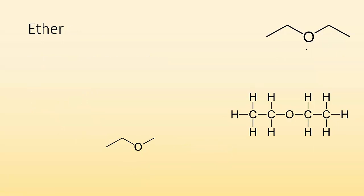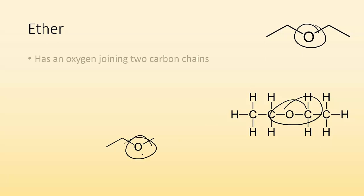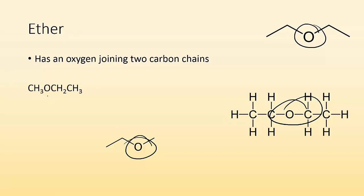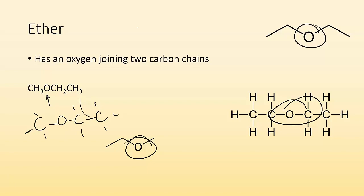Ethers — you're looking for an oxygen in the middle of a carbon chain, connecting two carbon chains. On either side of the oxygen, there is a carbon chain. In the condensed structural formula it goes CH3, then O, then CH2, then CH3. You can tell that oxygen is in the middle of two carbon chains — that's how you know you have an ether.